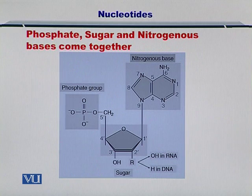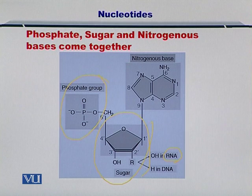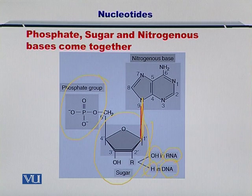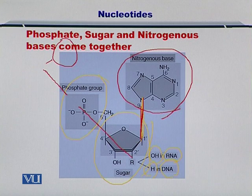How do these phosphates, sugars and nitrogenous bases — these nucleotides — come together? The phosphate group is shown here, the sugar is shown here. In case of RNA you will have an OH here, while in case of the DNA you will only have a hydrogen here. On top of this, the nucleotide base comes and attaches itself. In this way the phosphate-sugar-phosphate-sugar chain continues and newer nucleotides come and attach themselves, and the DNA or the RNA molecule is constructed.